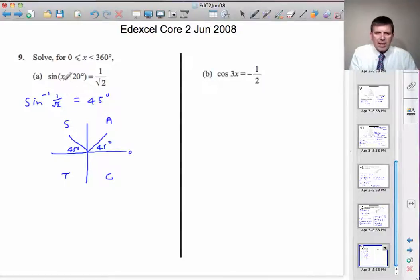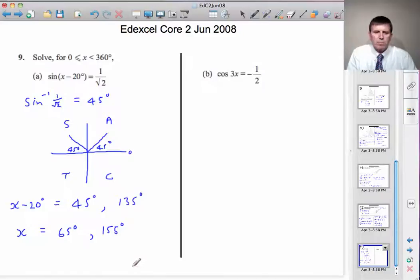But that's not x. That's x minus 20. So, we can say x minus 20 is equal to either 45 degrees or 135 degrees. Which means that x, taking the minus 20 to the other side, x will be 65 degrees or 155 degrees. Just adding on the 20 to both these answers here. And that completes that part of the question.